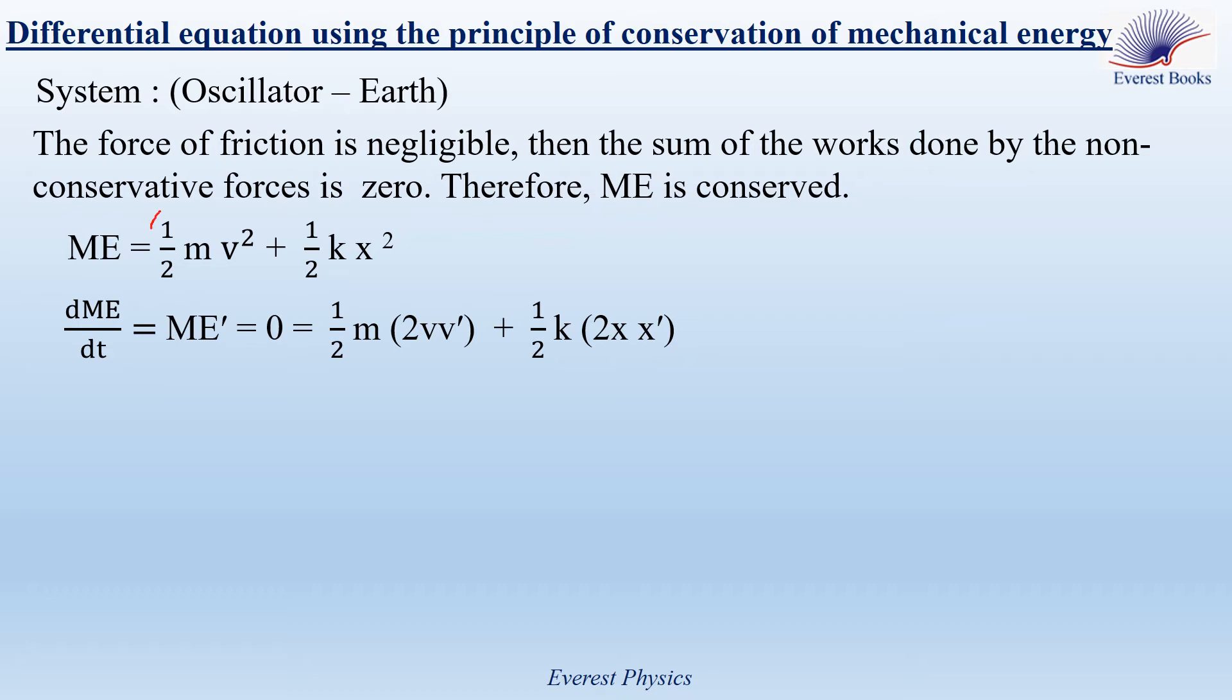Now, let's differentiate the right side of this equation with respect to time. One-half M is a constant, so it stays the same, and the variable is v squared, its derivative is 2v v prime. Similarly, one-half K is constant, and the variable is x squared, so its derivative is 2x x prime. Now, the numbers cancel out.